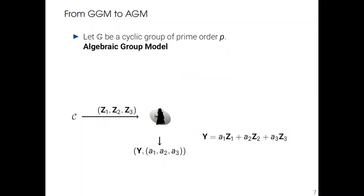In the algebraic group model, the adversary has access to the real values of the group elements, but it continues to give us the scalar representation of the output group element. This is really different from the generic group model, because in the generic group model the adversary did not have access to the real information, and so we can do security proofs using information-theoretic arguments. But in the algebraic group model, because the adversary has access to the information, we can't use this sort of argument and we have to use a reduction exactly like in the standard model.